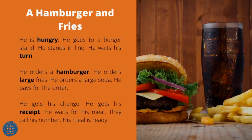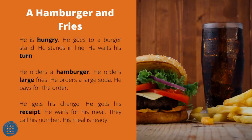A Hamburger and Fries. He is hungry. He goes to a burger stand and stands in line. He waits his turn. He orders a hamburger, large fries, and a large soda. He pays for the order, gets his change, and gets his receipt. He waits for his meal. They call his number — his meal is ready.